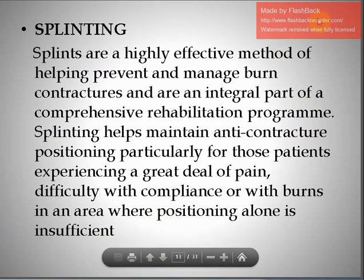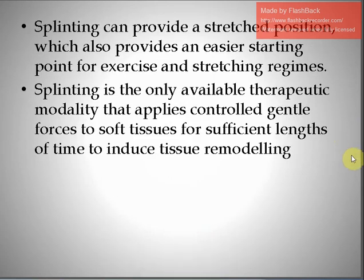Positioning and splinting play a very effective role in preventing and avoiding the development of contractures. Splints are a highly effective method of helping prevent and manage burn contractures and are an integral part of a comprehensive rehabilitation program. Splinting helps maintain anti-contracture positioning, particularly for patients experiencing significant pain, difficulty with compliance, or burns in areas where positioning alone is insufficient. Splinting can also provide a stretched position and is the only available therapeutic modality that applies controlled, gentle forces to soft tissues for sufficient time to induce tissue remodeling.